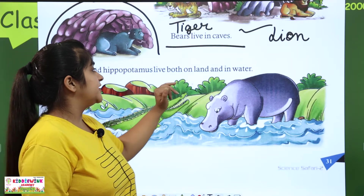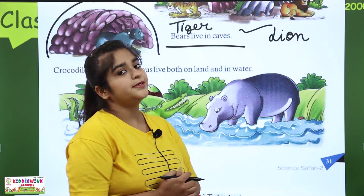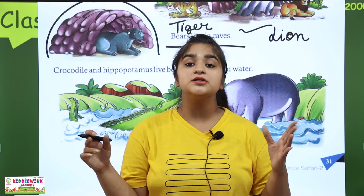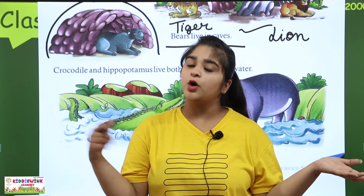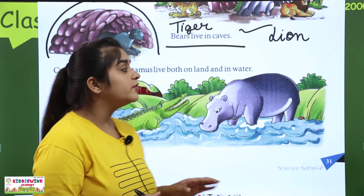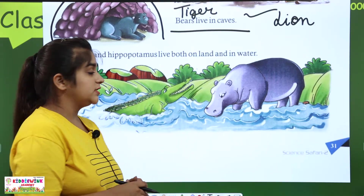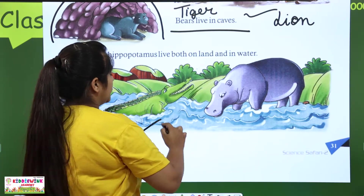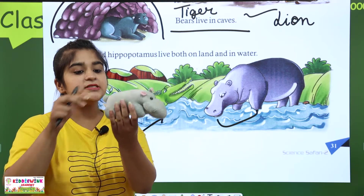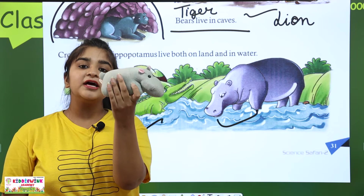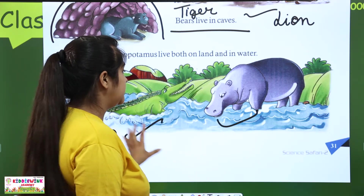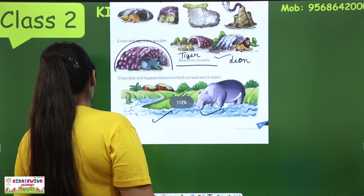Crocodile and hippopotamus live both on land and water. There are animals that live on land, but there are also animals that live both on land and water. Crocodile and hippopotamus are those animals.